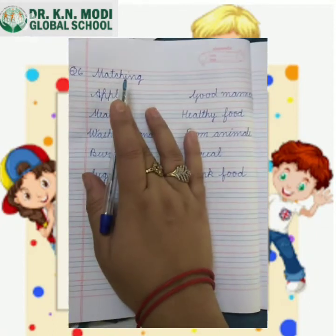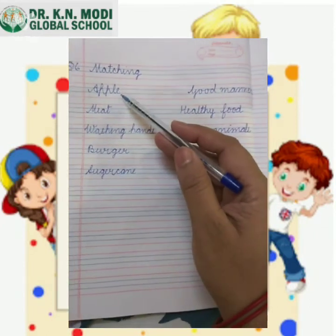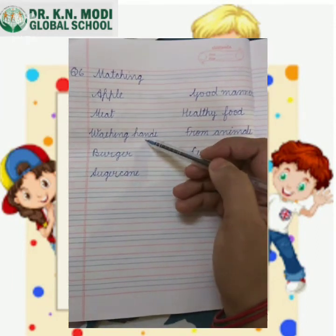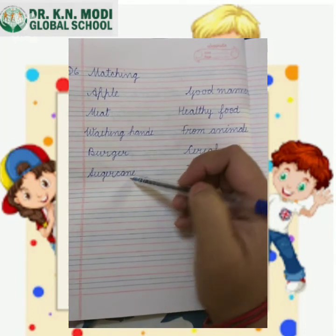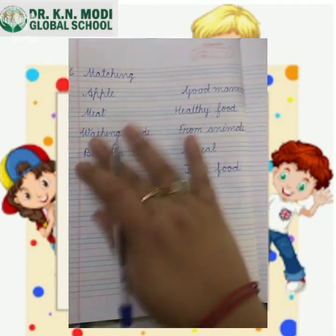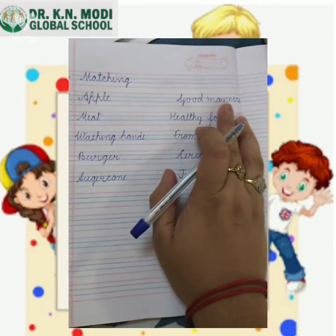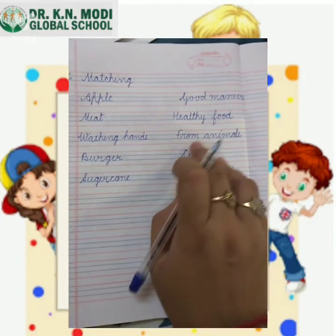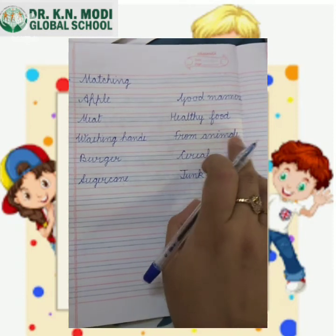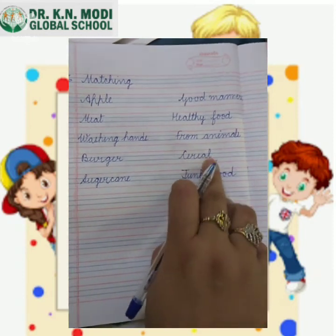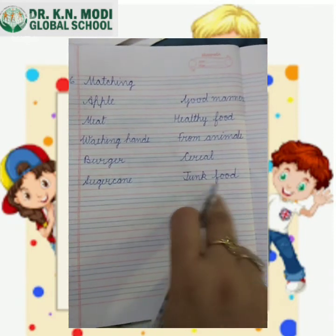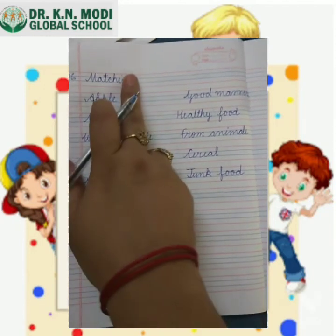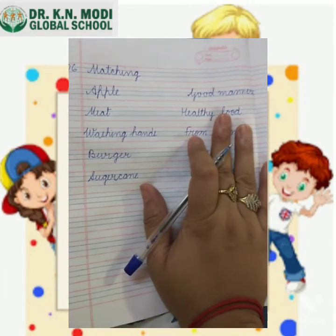Question number six is matching. On one side: apple, meat, washing hands, burger, sugar cane. On the other side: good manners, healthy food, from animals, cereal, and junk food. Children, you have to match items from one side to the other.